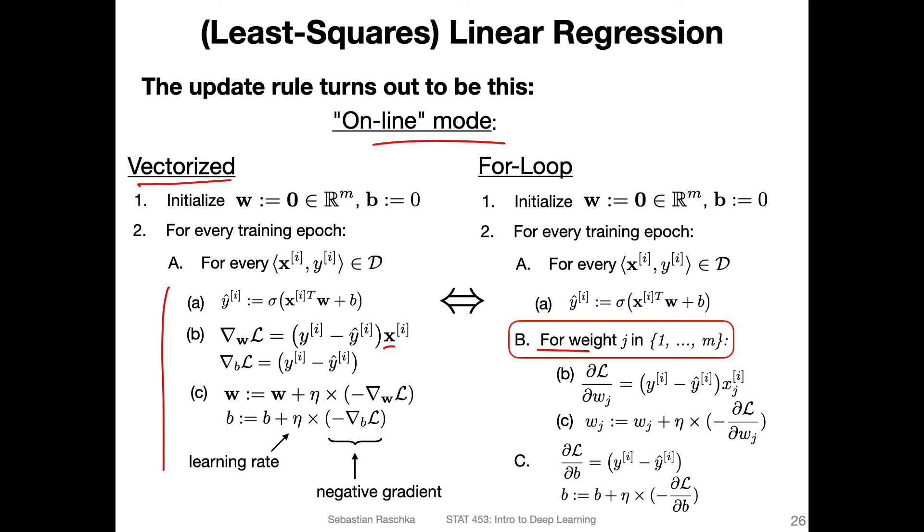So if we have a dataset where our dimensionality of the inputs is m, so we have m features, what we can do is then for each weight. The number of weights is equal to the features, right? Because if I have my input set, x one, x two, x three, then here, they go into my net input function, and each input is associated with a weight. I'm not drawing the bias here. But each input is associated with a weight. So we have m weights, and I can for each weight separately compute the partial derivative of the loss with respect to that weight.